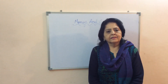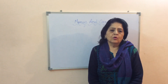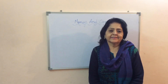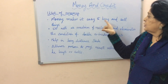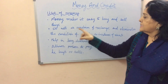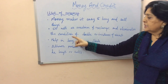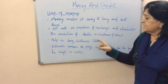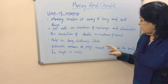Before the advent of money, the things used for exchange were grain and cattle. Thereafter, metallic coins of gold, silver, and copper came to be used as a medium of exchange. Money makes it easy to buy and sell things — it acts as a medium of exchange and eliminates the condition of double coincidence of wants.